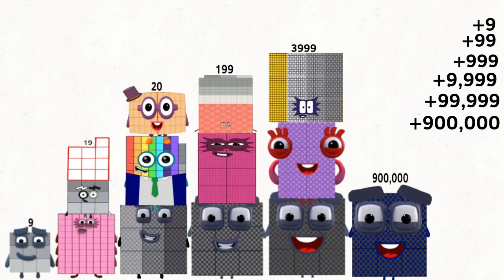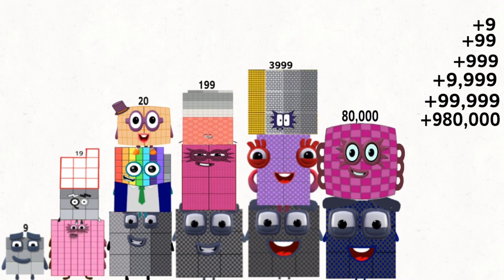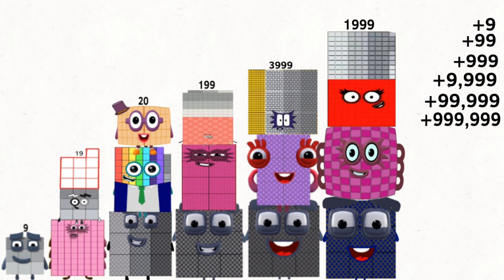900,000 plus 80,000 plus 1,999, and equals is 999,999.